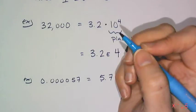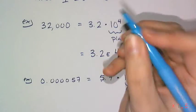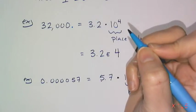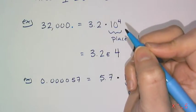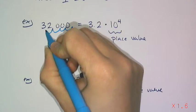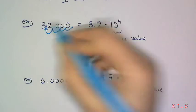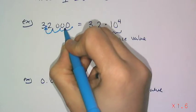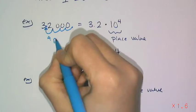So the way to convert numbers to scientific notation is to locate the decimal and then move the decimal so that the number is between 1 and 10. So you have to move it here in between the 3 and the 2. And then what you do is you count how many places you moved it. So you moved it 1, 2, 3, 4 places.